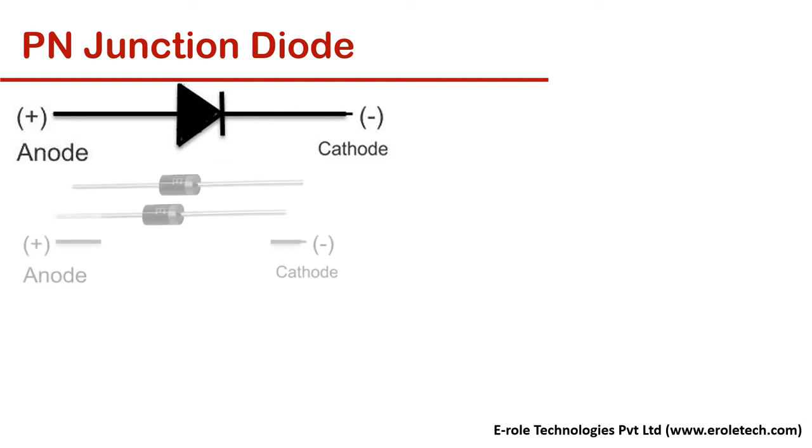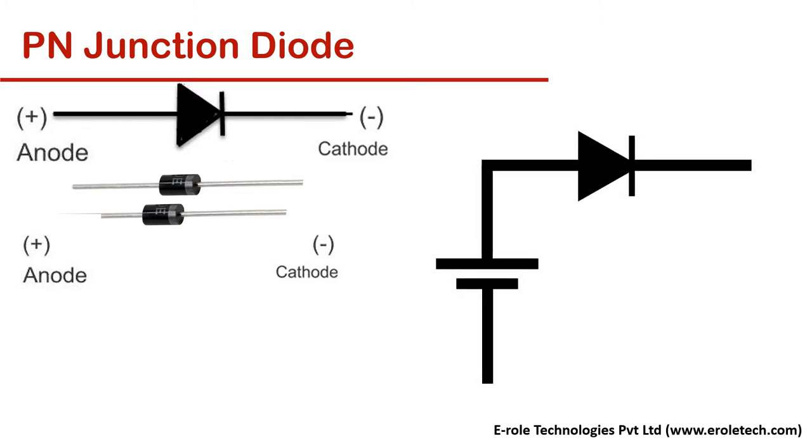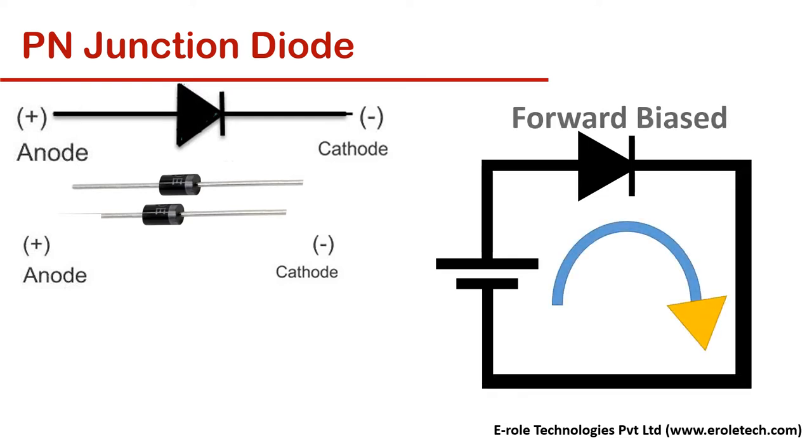We can identify the cathode by this gray mark. When anode is connected to the positive terminal of power supply and cathode is connected to the negative terminal of power supply, then it is called forward biasing.